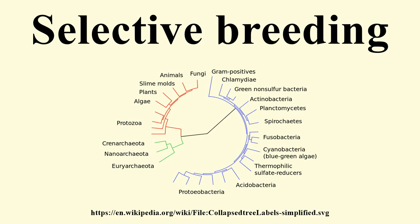Selective breeding was established as a scientific practice by Robert Bakewell during the British Agricultural Revolution in the 18th century. Arguably, his most important breeding program was with sheep. Using native stock, he was able to quickly select for large yet fine-boned sheep with long, lustrous wool. The Lincoln Longwool was improved by Bakewell, and in turn the Lincoln was used to develop the subsequent breed named the New Leicester.